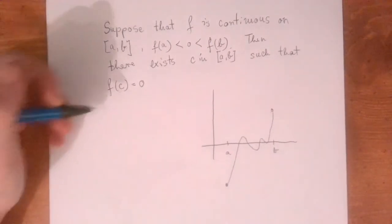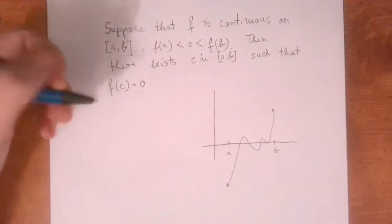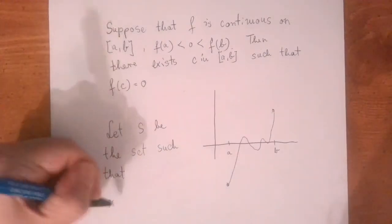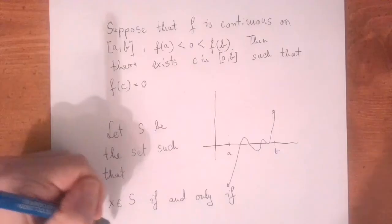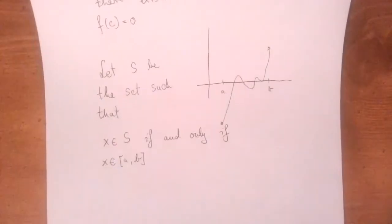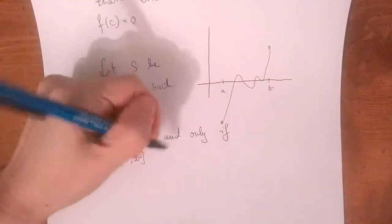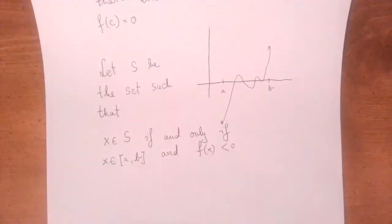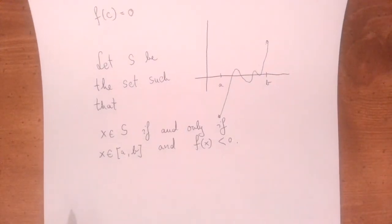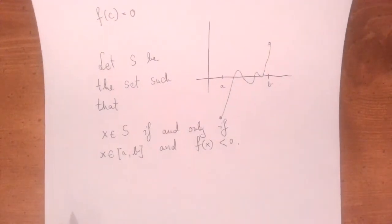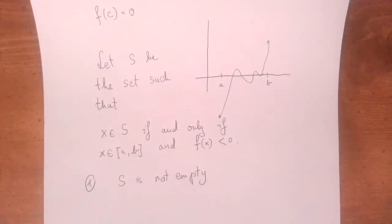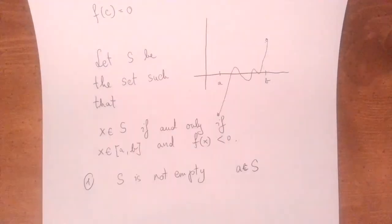Let us first define a set S as follows: x is in S if and only if x is in the interval a, b and f of x is negative. We're going to apply the least upper bound property for this set. First, this set is not empty, because a is in this set.